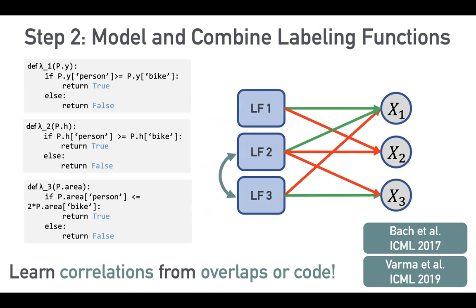Another thing we can do is learn correlations that exist between different labeling functions. We can do this algorithmically — we don't want to double-count rules that look for the same thing. For example, if you have a rule that looks for the word 'cause' and another that looks for 'because,' there's going to be some overlap just because of how the rules are made, and we want to account for that.